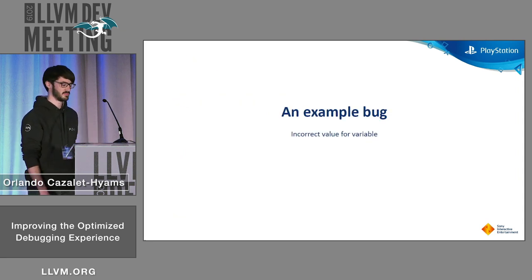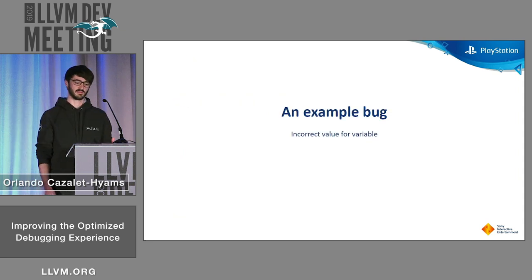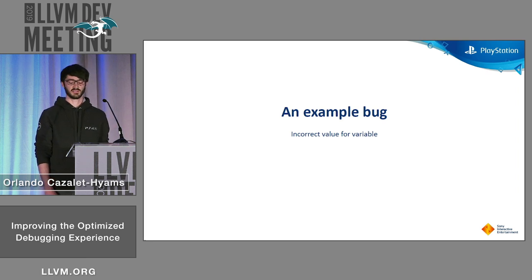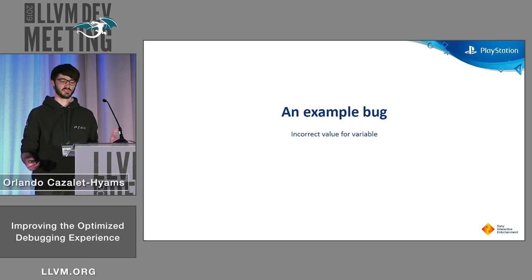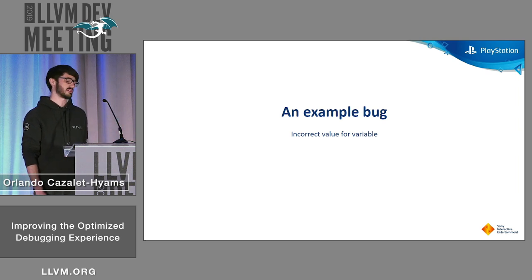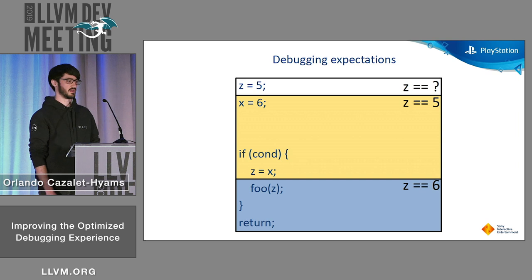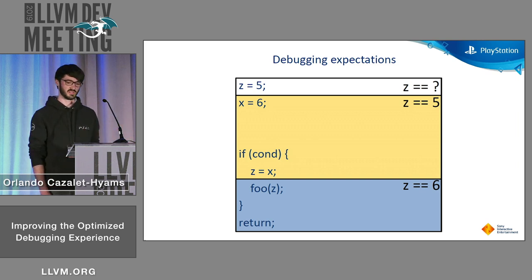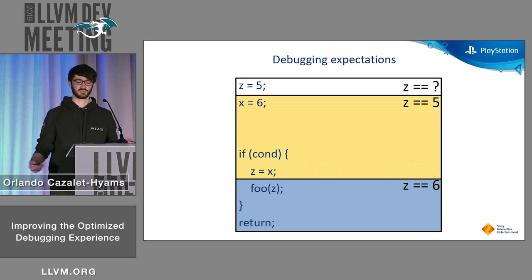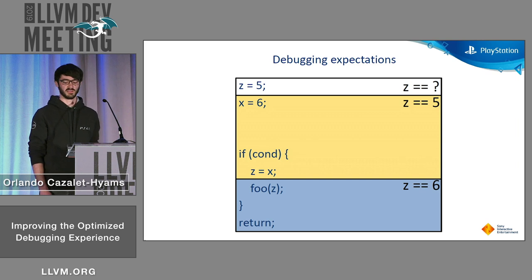I'm going to show you an example bug now — a test case based on a real Dexter test case which found a real bug. It's been reduced for simplicity here, and it shows an incorrect variable value being shown to the user. I'm representing the debug expectations visually. In an actual Dexter test we have the comments, but for simplicity I just have colors here.